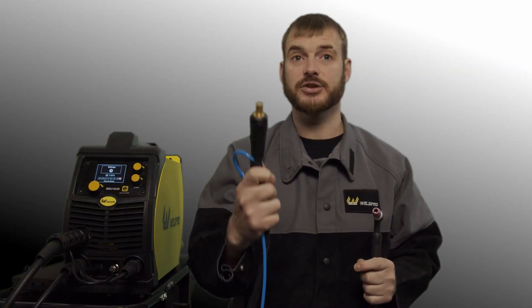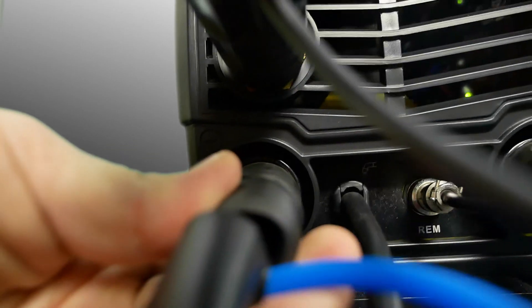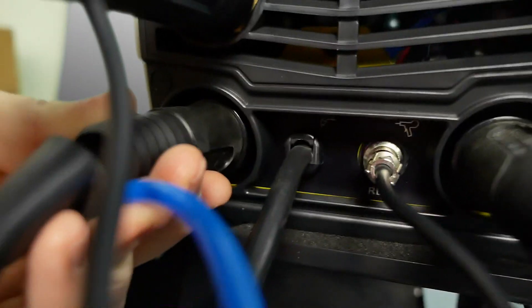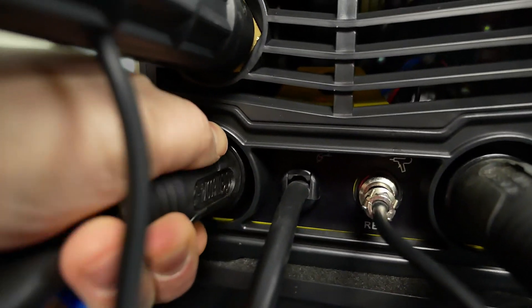The next step to get the TIG torch connected is to hook up the DINZ connector to the front of the machine. When running TIG we'll be using DC electrode negative polarity. This means we'll need to insert the DINZ connector for the TIG torch into the negative terminal on the front of the MiG-210 LCD. We'll tighten this by rotating it clockwise about 90 degrees.